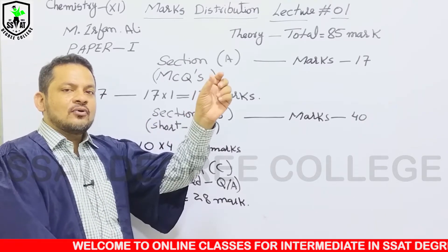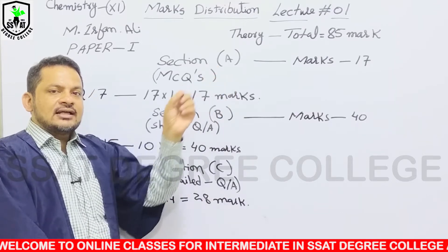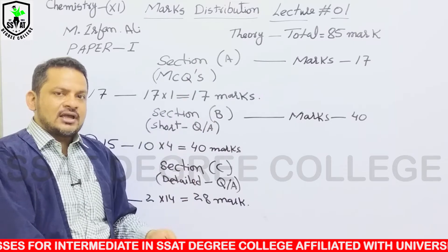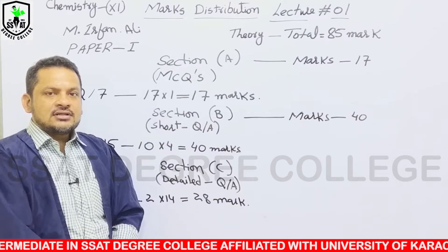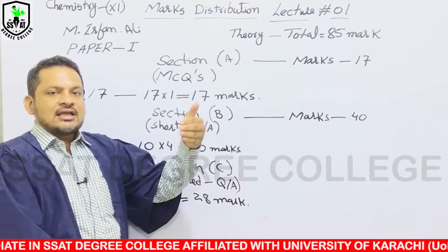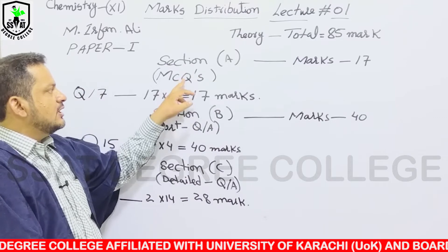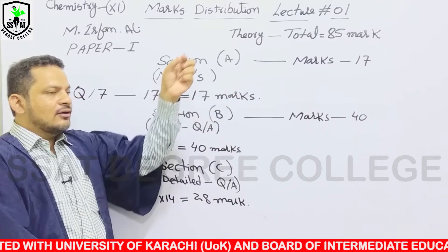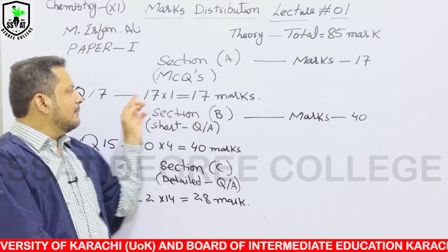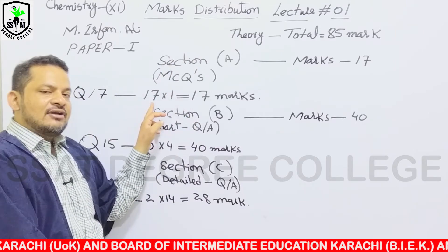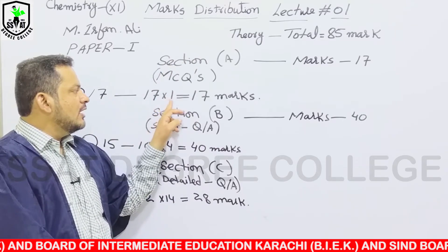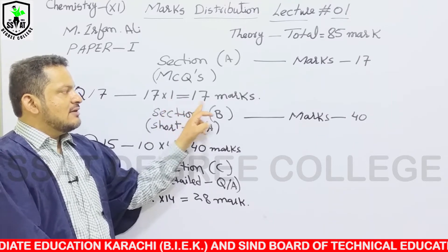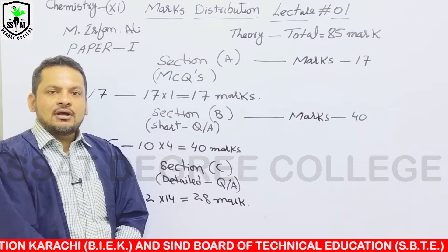फिर 1 से 17 तक Questions को Sequence में Attempt करें। Section A में 17 MCQs होते हैं जो 20 Minutes में करने होते हैं। सभी 17 Questions Attempt करने होंगे, हर Question एक Mark का होगा। इस तरह Section A के 17 Marks मुकमल हो जाएंगे।